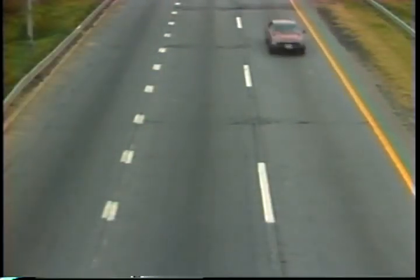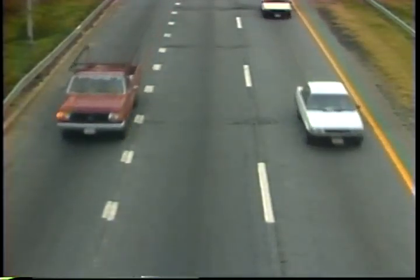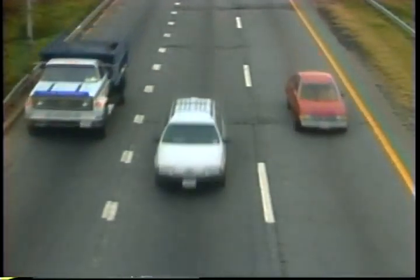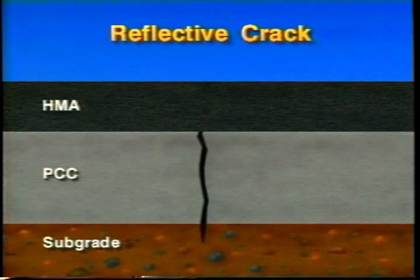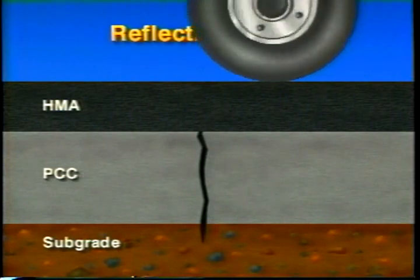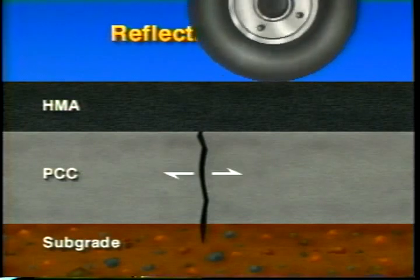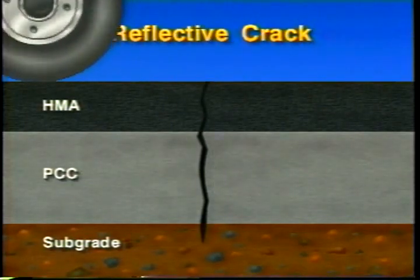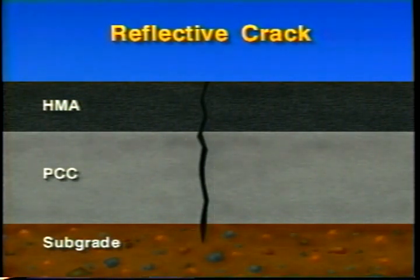An asphalt overlay is the most common method of repair for concrete pavement. However, the overlay can eventually experience extensive reflective cracking. Reflective cracks in asphalt overlays mirror or reflect the crack and joint pattern of the underlying concrete slabs. These cracks result from traffic loadings, thermal stresses, and moisture problems, which cause the slabs to move, eventually causing reflective cracks in the asphalt overlay.